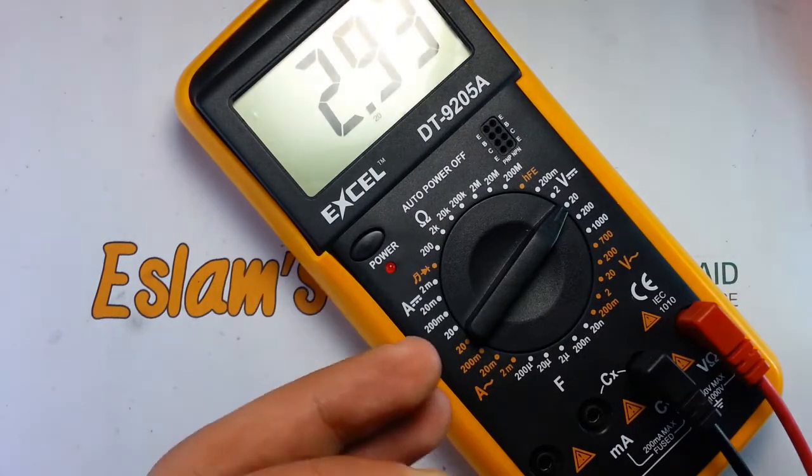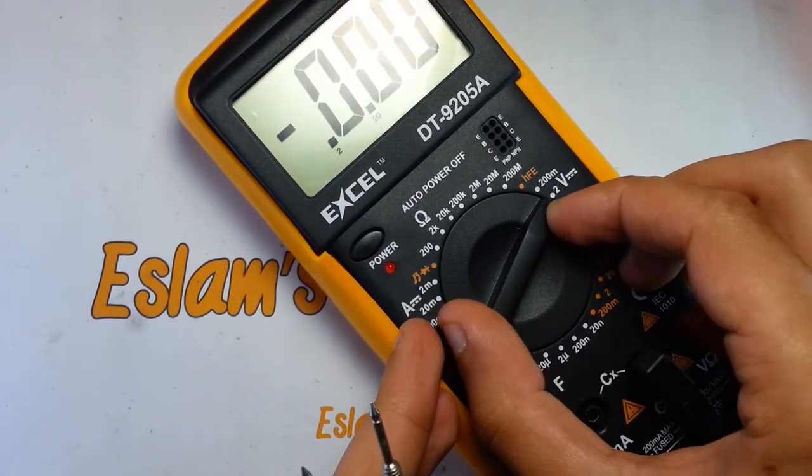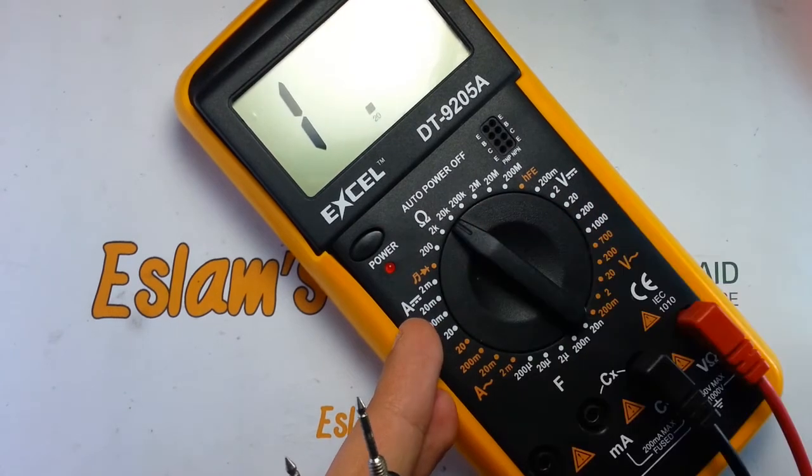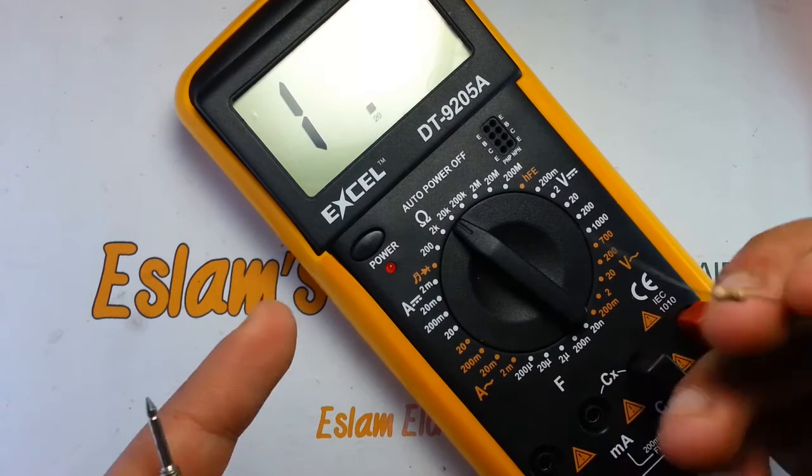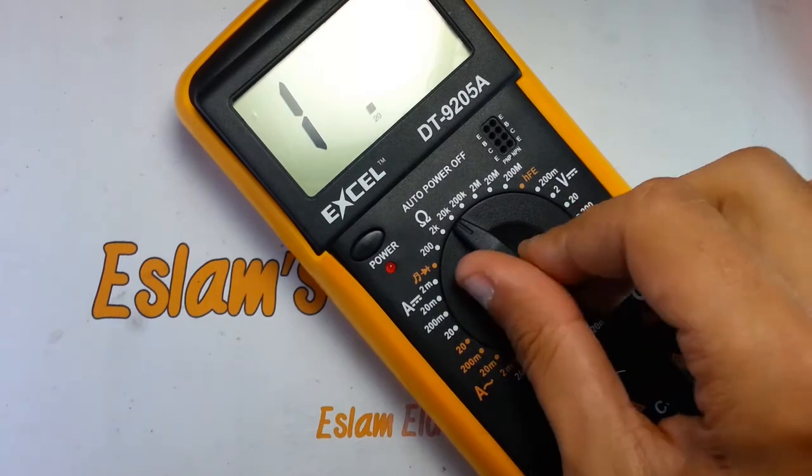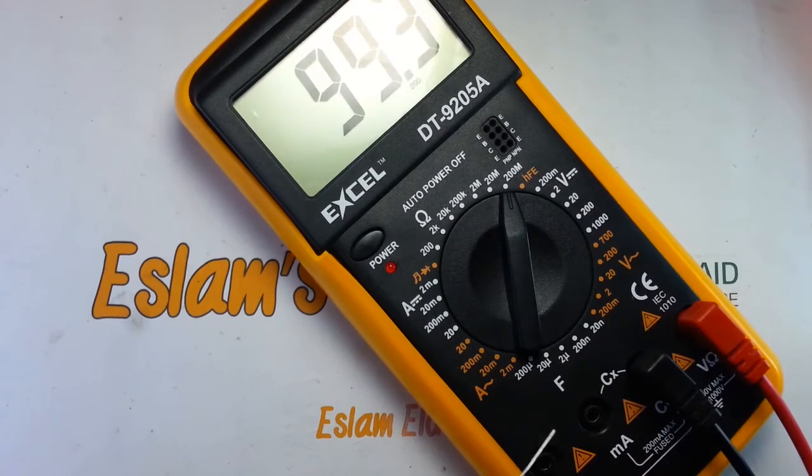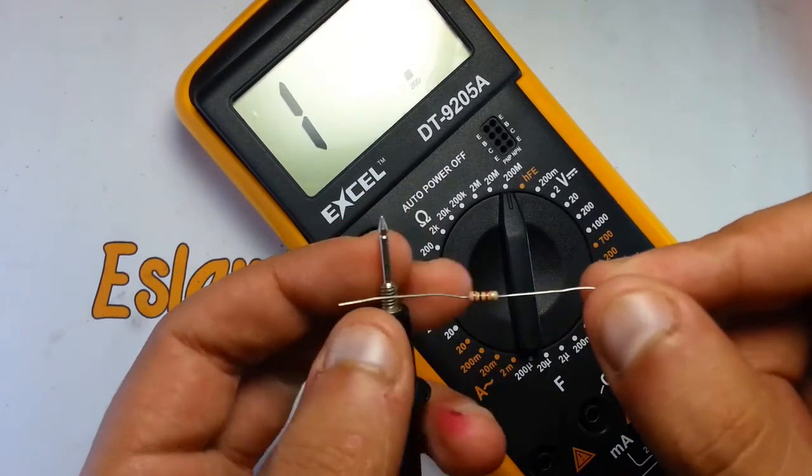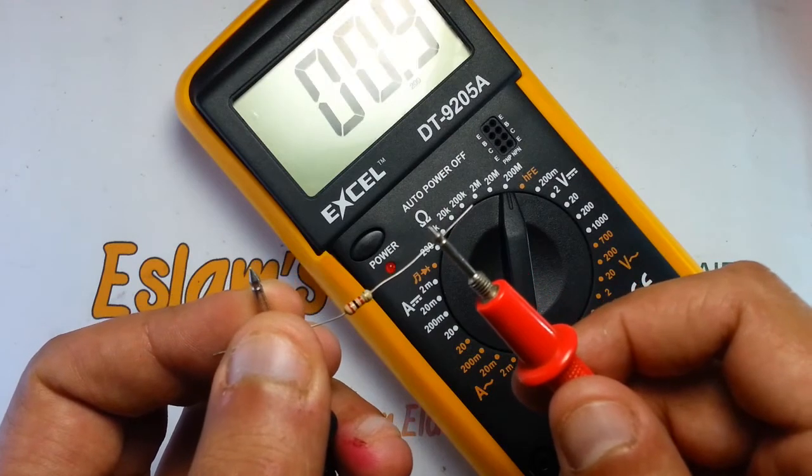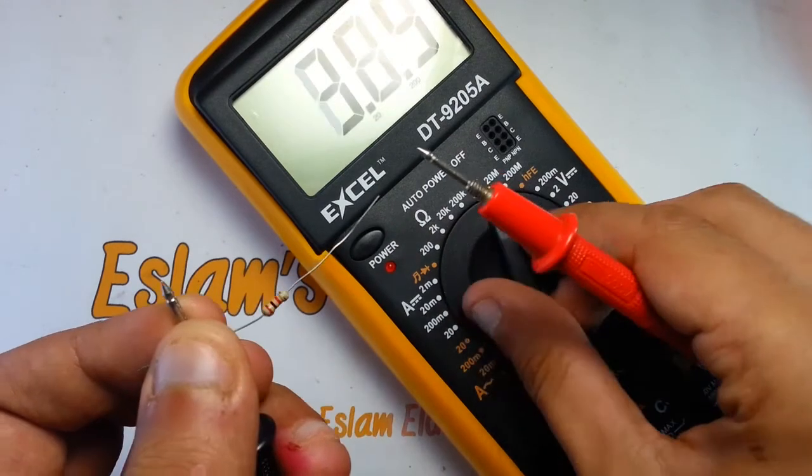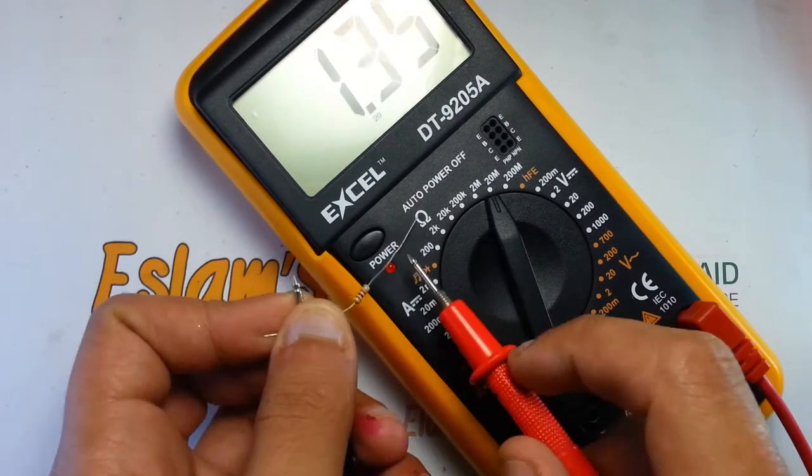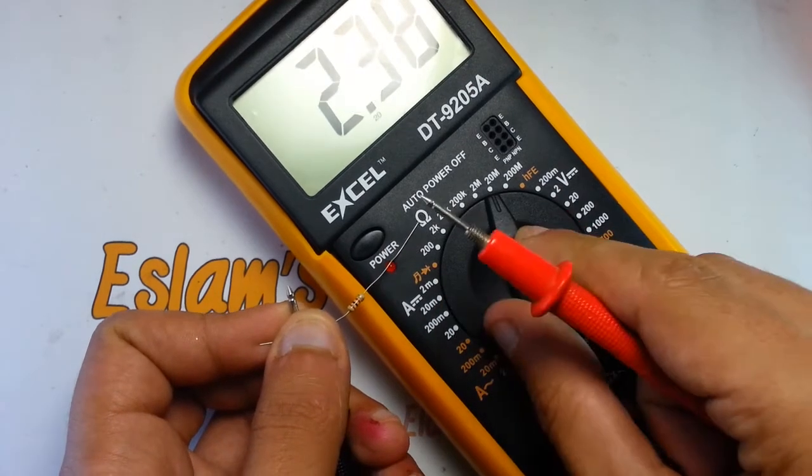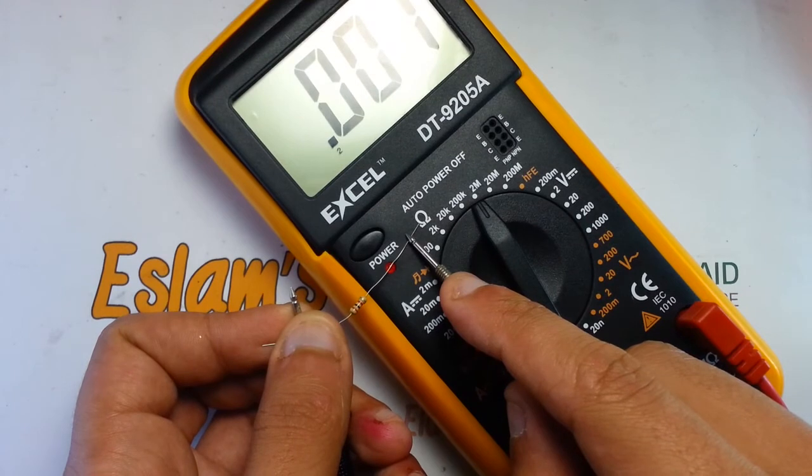Next is ohm measuring. Move the cursor to the ohm section. The red lead is connected to the connector we talked about before, so we don't have to remove it. Here I set the cursor to 20 kilo-ohm. If we don't know the resistor value, I usually set the cursor to the highest value and start measuring the resistance, then go down by the cursor to get better resolution.